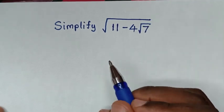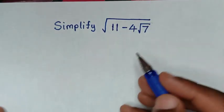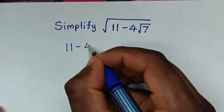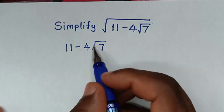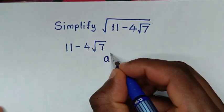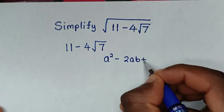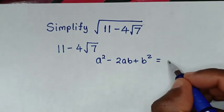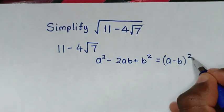In the first step, from this expression under the square root — which is 11 minus 4 square root of 7 — we make this expression in the form of a squared minus 2ab plus b squared, which is equal to a minus b, bracket squared.